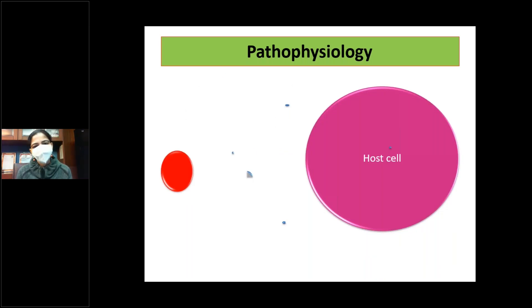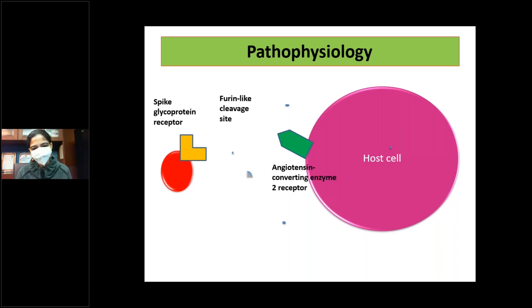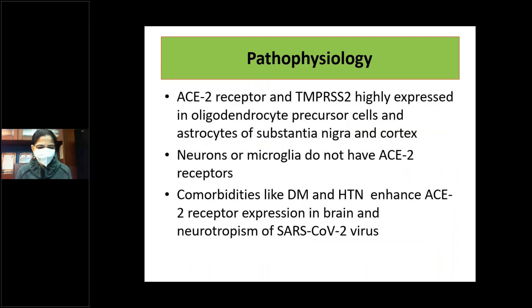The coronavirus contains a spike glycoprotein receptor that helps it adhere to the host cell, which in turn carries the ACE2 (angiotensin-converting enzyme 2) receptor. The TMPRSS2 enzyme also facilitates this infection process. Oligodendrocyte precursor cells mainly express ACE2 and TMPRSS2 receptors, while neurons and microglia do not. In the presence of diabetes and hypertension, ACE2 receptor expression increases in the brain, raising neurotropism of the virus.